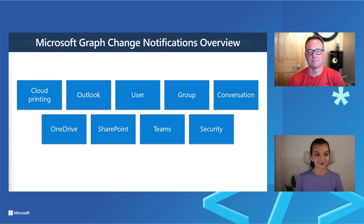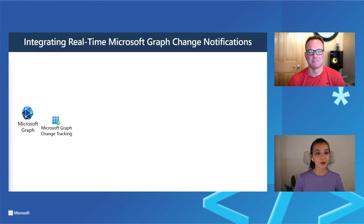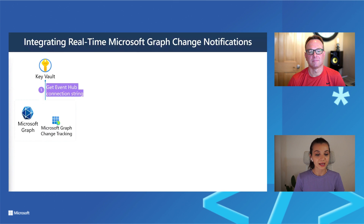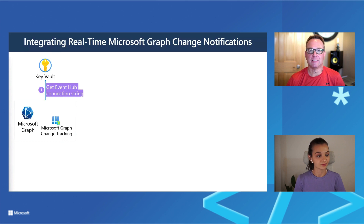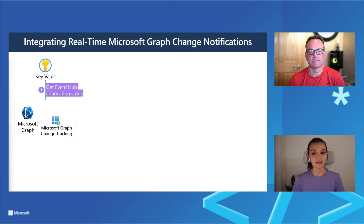Now I'll show you how to integrate real-time change notifications into your apps — for us, a React app. We'll start by setting up Azure Key Vault and Azure Event Hubs, then get the Event Hub connection string into Key Vault. The reason is to keep our connection string secure — Key Vault is very useful for connection strings or any sensitive data you don't want exposed.